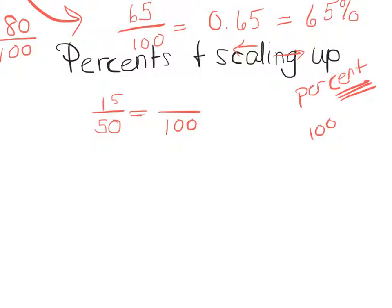So how did 50 become 100? 50 times 2. So now I have to remember the whiny kid. 15 times 2, I get 30 to 100.